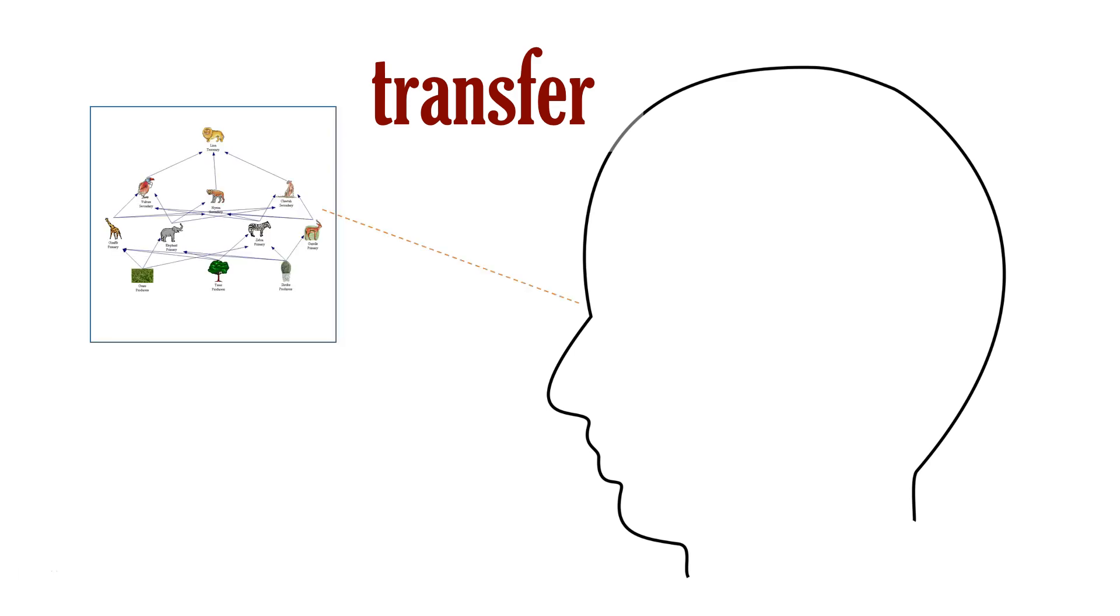For instance, the food chain example could teach using one example of a food chain. Then the transfer test would ask them to analyze a completely different food chain. If a student can complete the task, we know they have achieved conceptual change, meaning they get the underlying idea of food chains rather than just remembering facts.